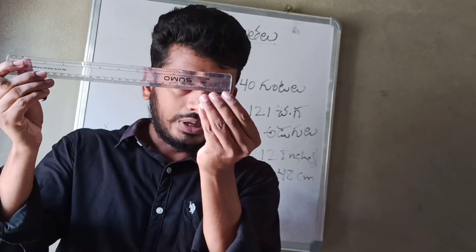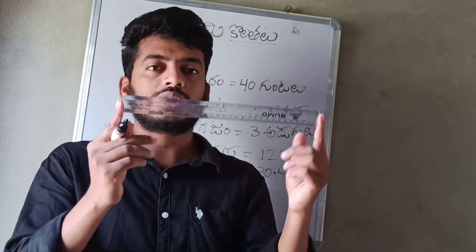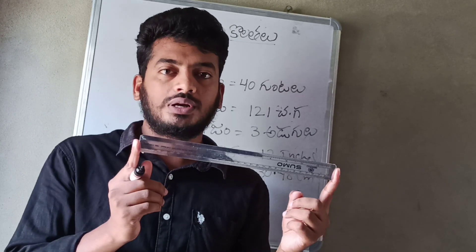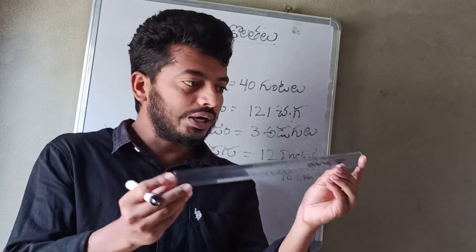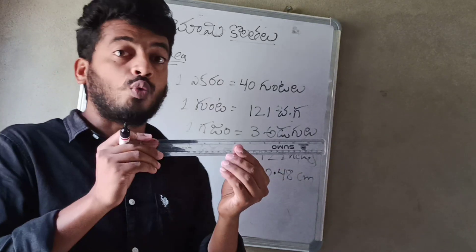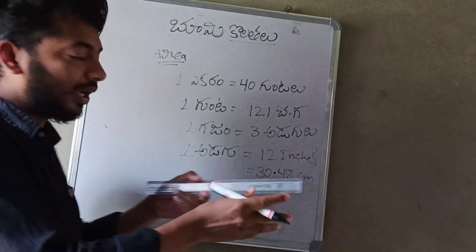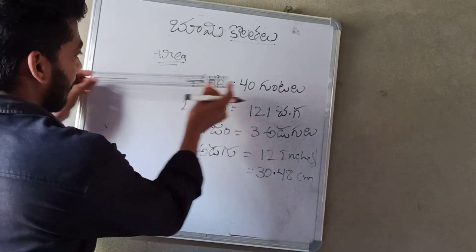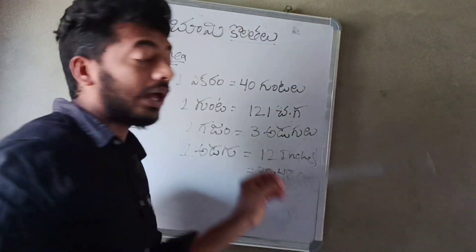Now, scale: 1 foot is approximately 30 cm, but with the extra 0.5 cm the total length becomes 31 cm. So scale 1 is 31 cm.